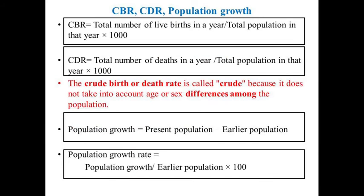Here are the formulas for CBR, CDR, and population growth. The formula for population growth is: present population minus earlier population. Population growth rate is calculated as population growth divided by earlier population, multiplied by 100.